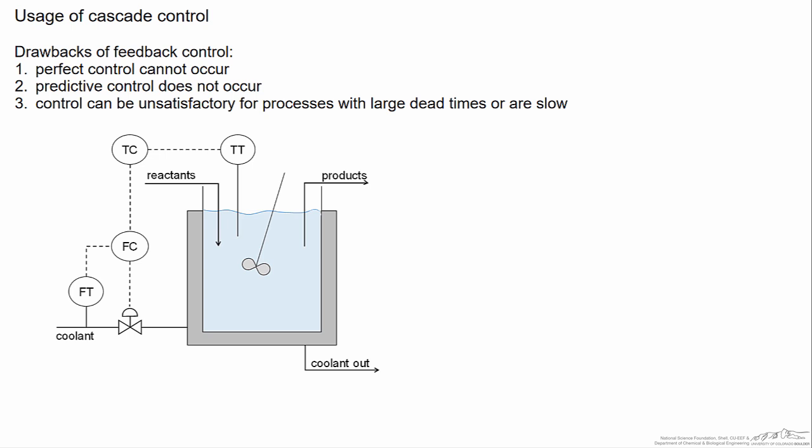So cascade control cannot provide perfect control. We will discuss why a little bit later on. However it can help with both predictive control and speeding up the process. Both of those two are directly related to each other.